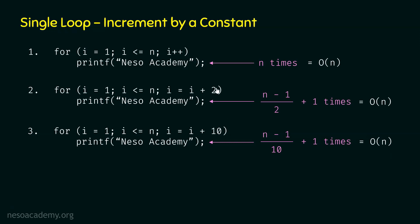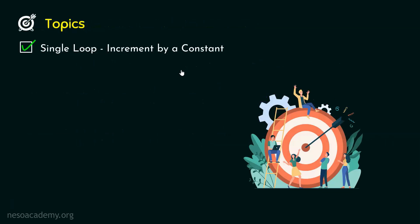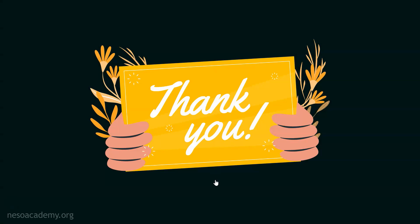The trick to remember: whatever constant is used in the increment step, put that constant in the denominator. With increment of 1, we get n/1 = n. With increment of 2, we get (n − 1)/2. With increment of 10, we get (n − 1)/10. The time complexity is always O(n) regardless of the constant. If asked for the exact number of executions, give the precise result; if asked for time complexity, give O(n) notation. You must be ready for both types of questions.